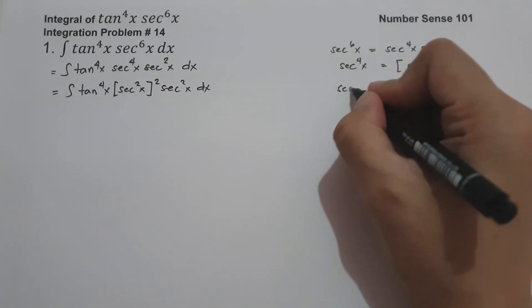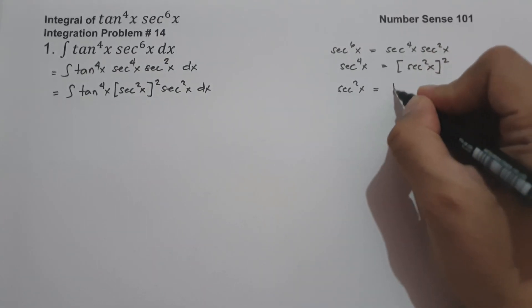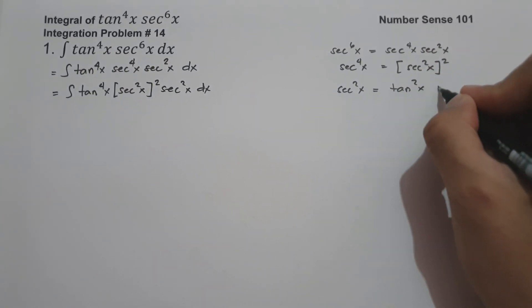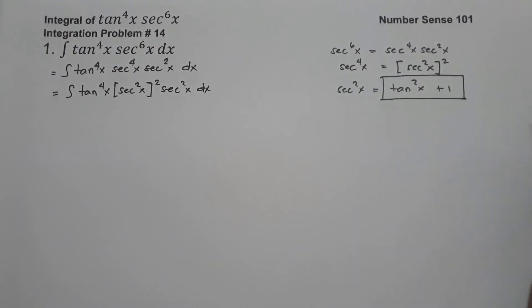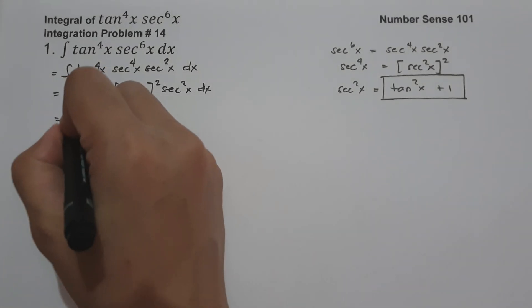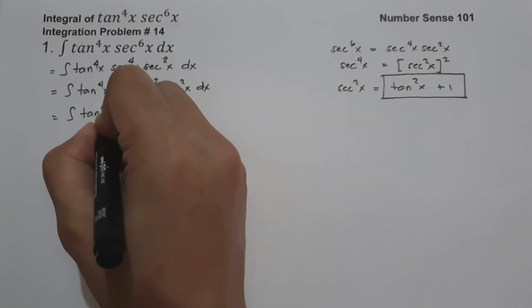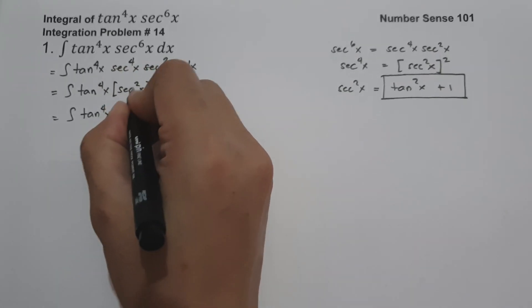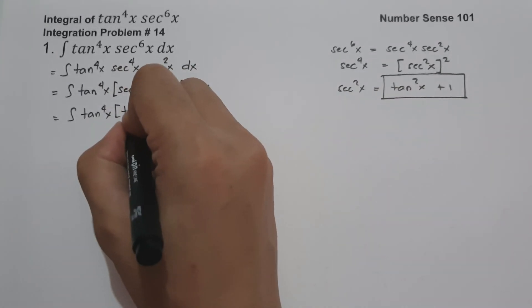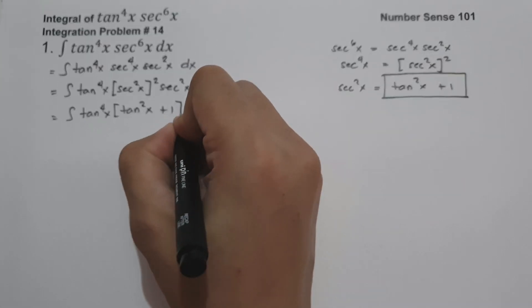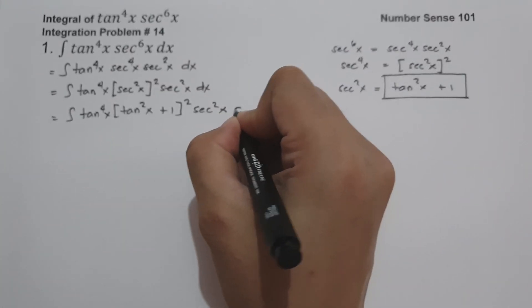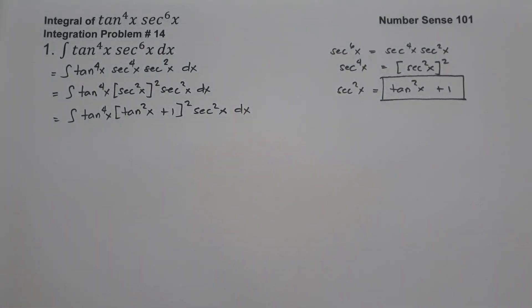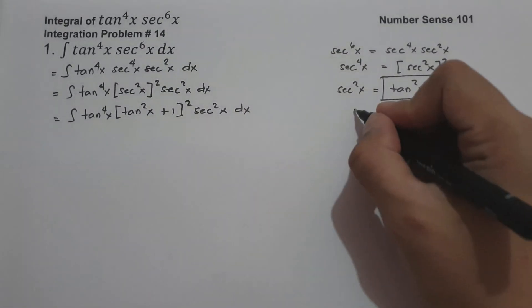Next, we apply the Pythagorean identity for sec²(x), which is tan²(x) + 1. Substituting this in, our integral becomes the antiderivative of tan⁴(x) · (tan²(x) + 1)² · sec²(x) dx.